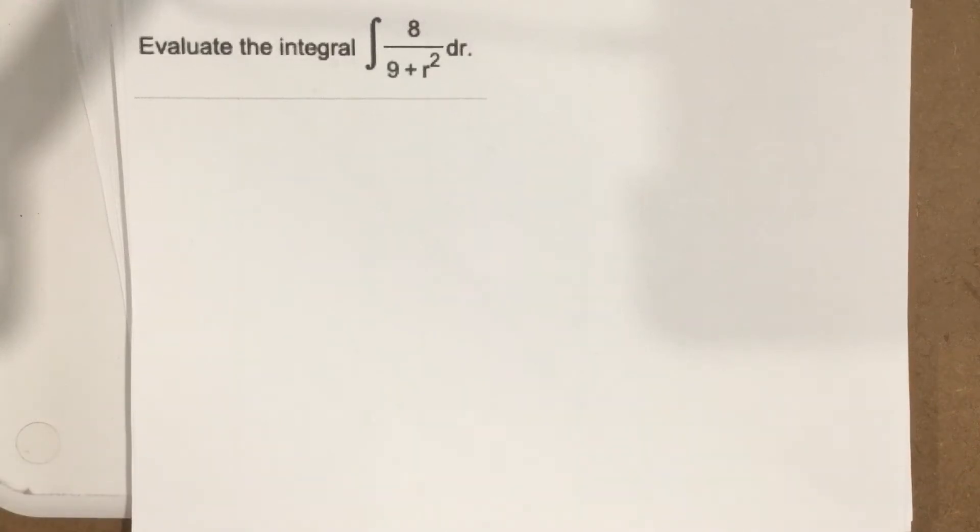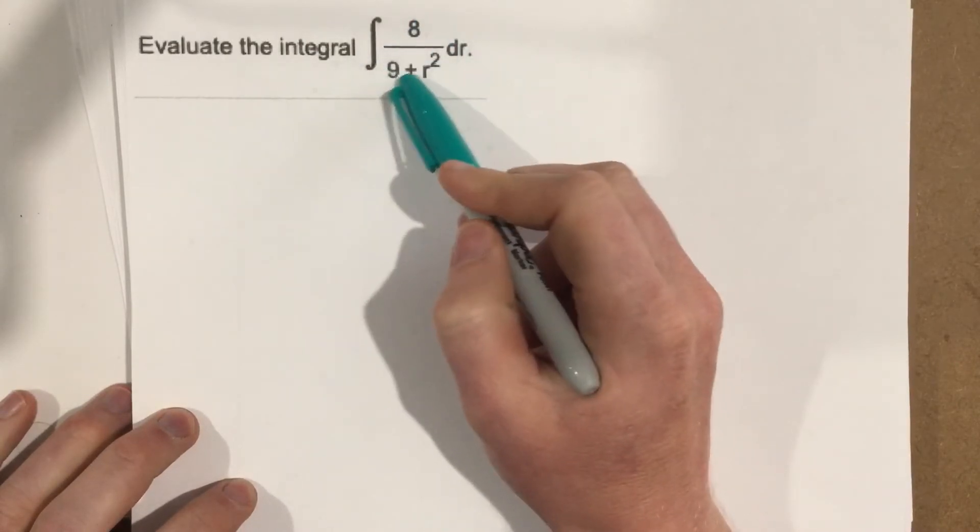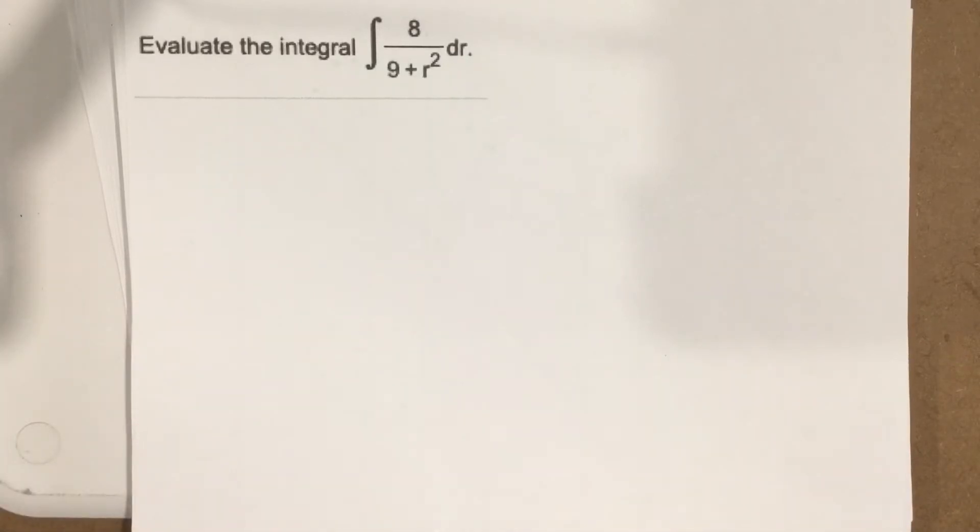This is problem number 6 from section 5.5. It says evaluate the integral of 8 over 9 plus r squared dr. It's a little bit of a tricky problem.